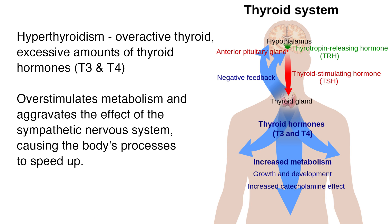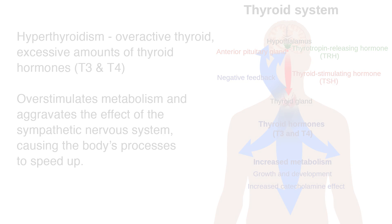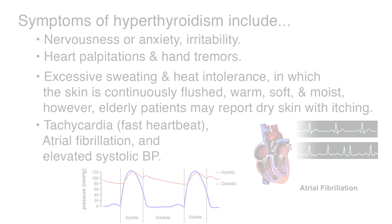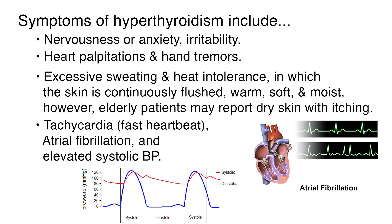When the thyroid gland is overactive, it overstimulates metabolism and aggravates the effect of the sympathetic nervous system, causing the body's processes to speed up. The symptoms of hyperthyroidism include the following: nervousness or anxiety, irritability, heart palpitations, and hand tremors.